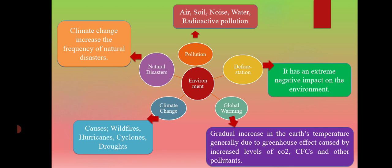The teacher writes 'environment' in the center of the blackboard. After hearing the word, each child shares what comes to mind. One member says 'pollution' — you write it on the blackboard. Another says 'deforestation' — you write that too. A third says 'global warming', a fourth says 'climate change', and then 'natural disaster'. All of these responses are acceptable.